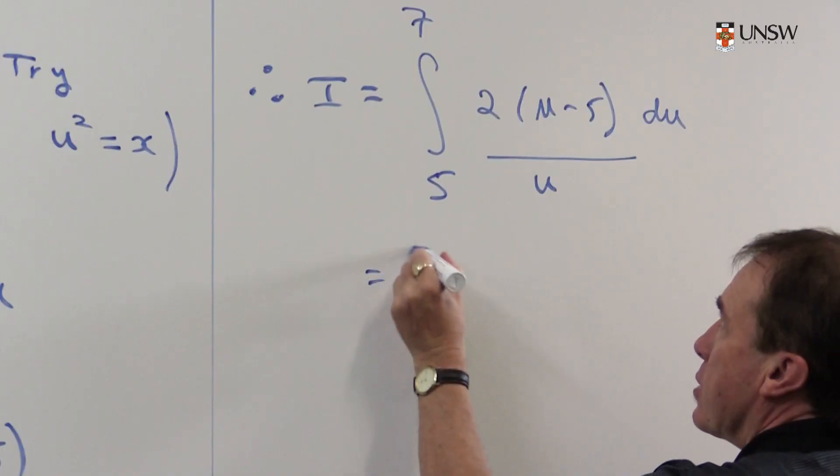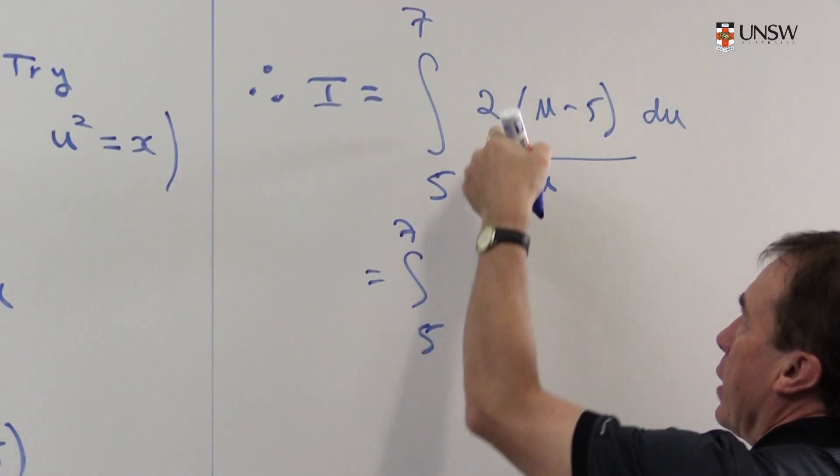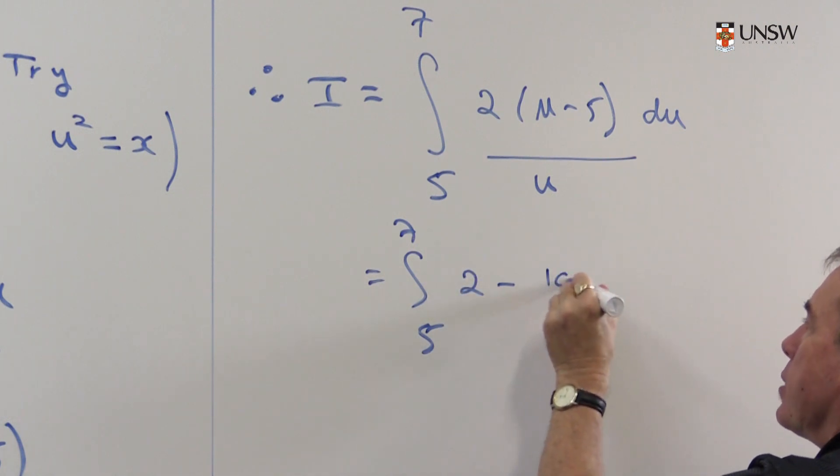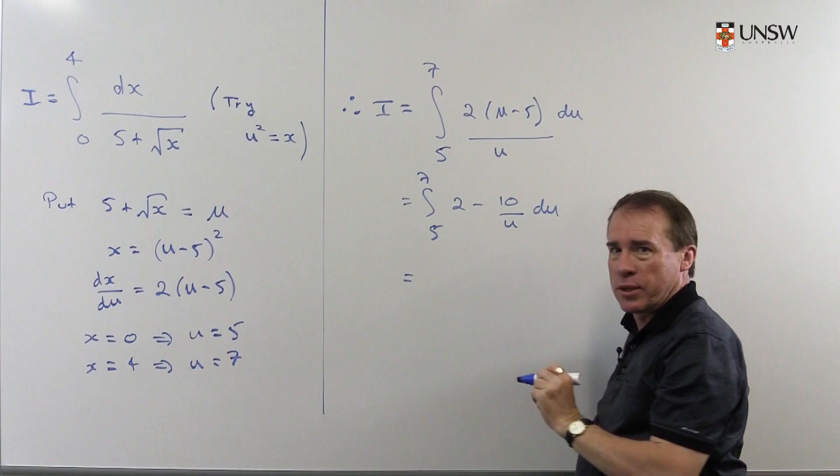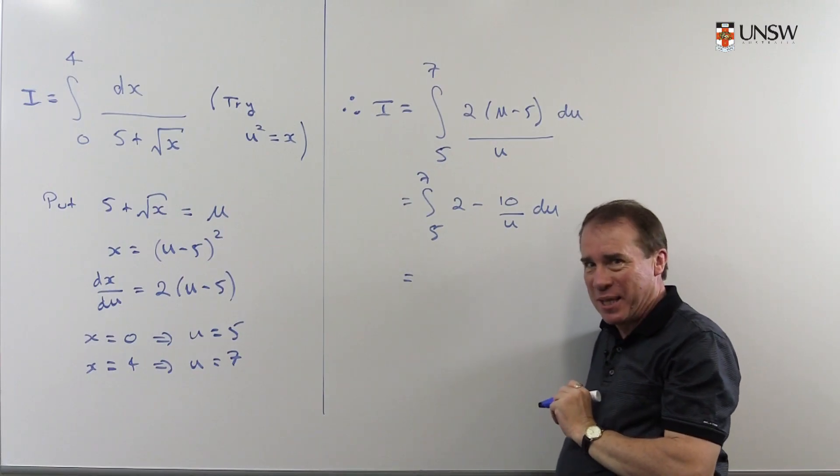Well now I can just divide. So I get 2u on u gives me 2 minus 10 over u du. And now we smile happily because that's a nice easy integral.